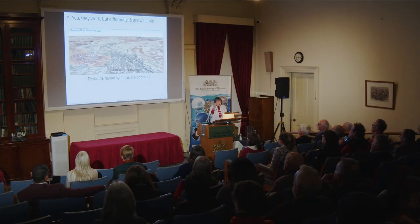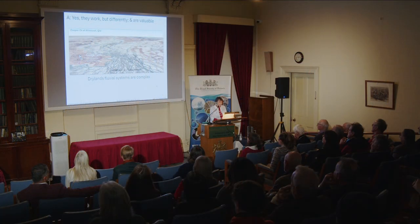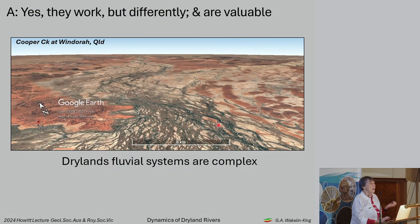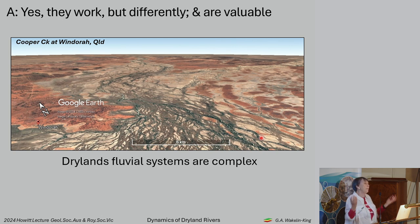They're dry — do they even work? Maybe they're just like normal rivers but completely inert. Dryland rivers do work. They work all the time, even when they're dry. Here we've got Cooper Creek. This is one of the narrowest places the Cooper floodplain gets, and it's about six kilometres across, with a whole plethora of fluvial landforms.